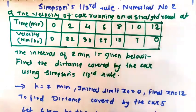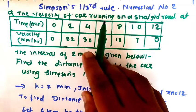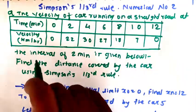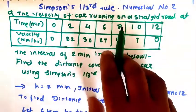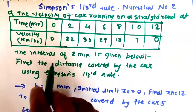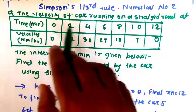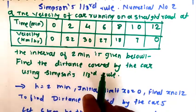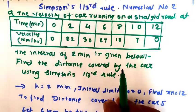Hello everyone, so in this video we are going to see Simpson's 1/3rd rule numerical number 2. The velocity of a car running on a straight road at the interval of 2 minutes is given below. Find out the distance covered by the car using Simpson's 1/3rd rule.